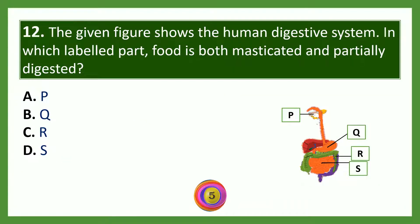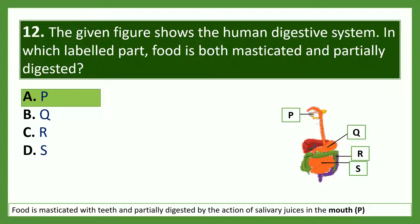The given figure shows a human digestive system. In which labeled part is food both masticated and partially digested? The answer is option A — P. Food is masticated with teeth and partially digested by the action of salivary juices in the mouth. P is the mouth.